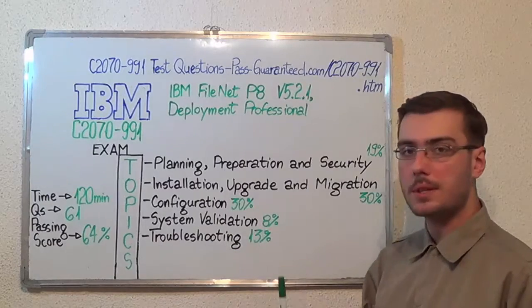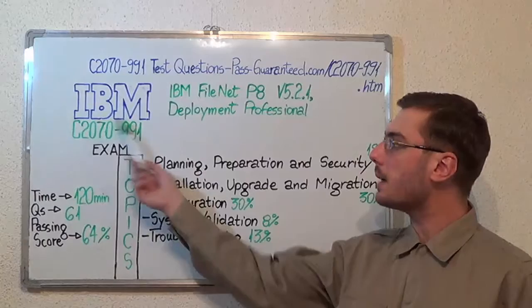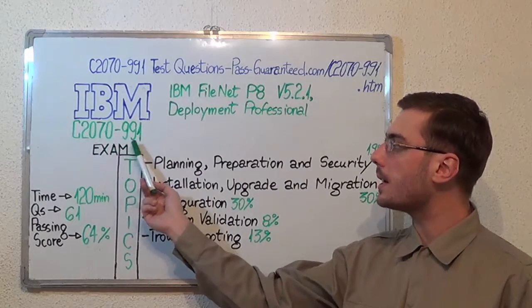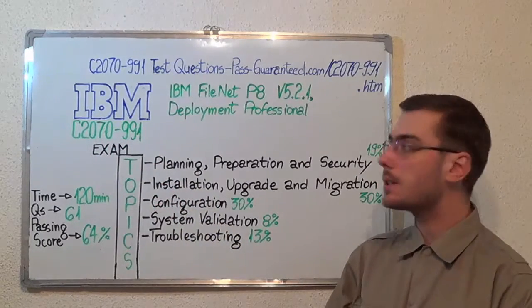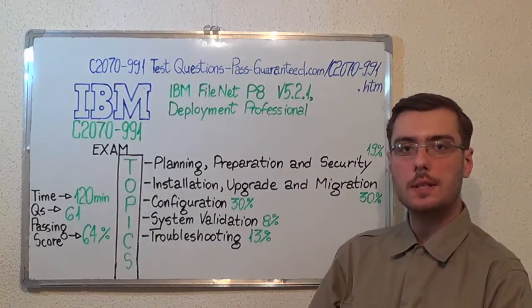And the last one, Problem Shooting, with 13%. You can visit PestGuarantee.com to successfully pass the IBM C2070-991 exam. Go to PestGuarantee then get the C2070-991, which covers all these exam topics.